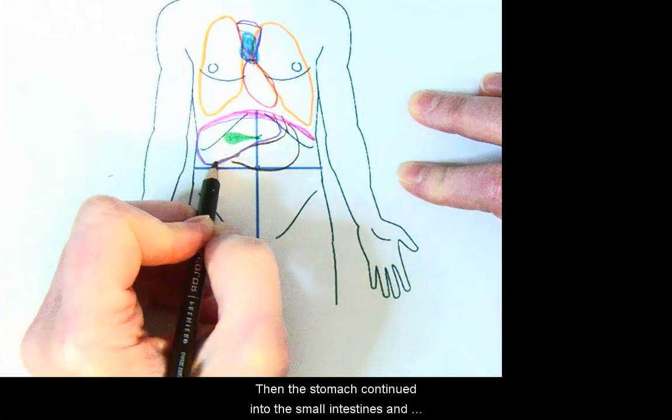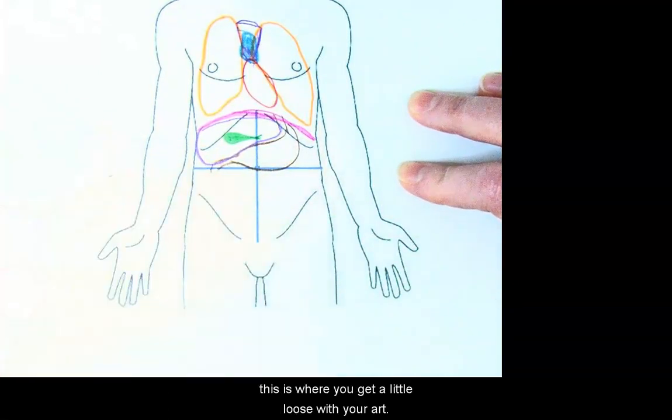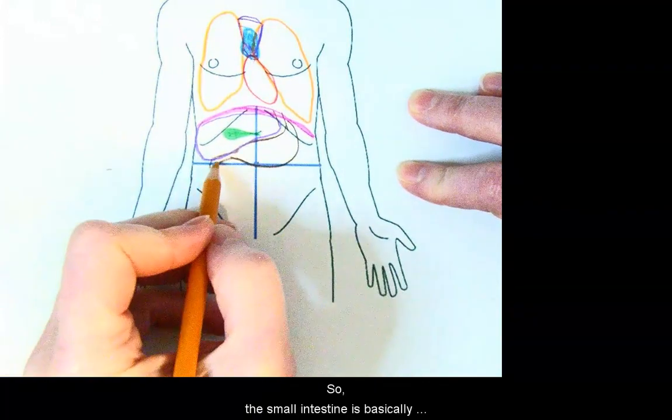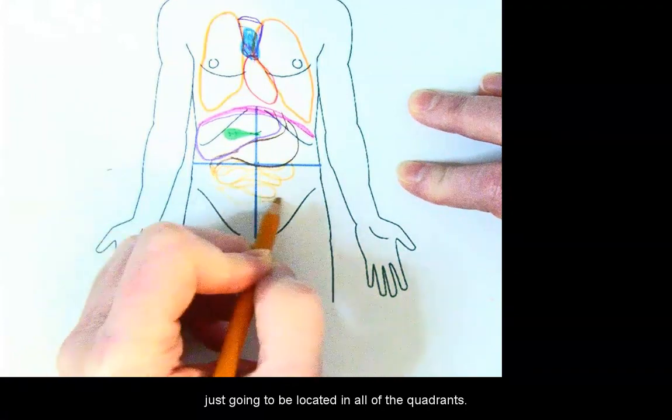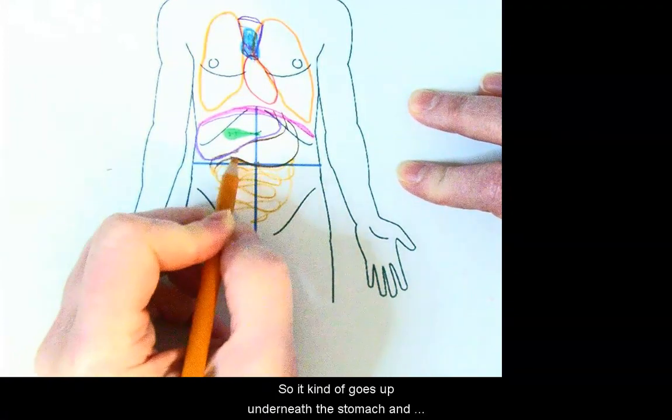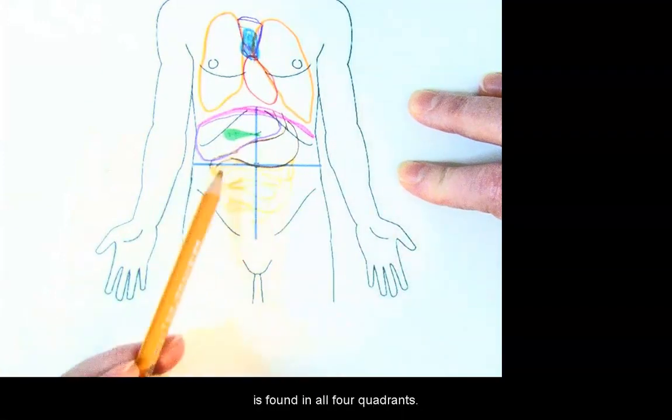Then the stomach continues into the small intestines, and this is where you get a little loose with your art, so the small intestine is basically just going to be located in all of the quadrants. So it kind of goes up underneath the stomach and is found in all four quadrants.